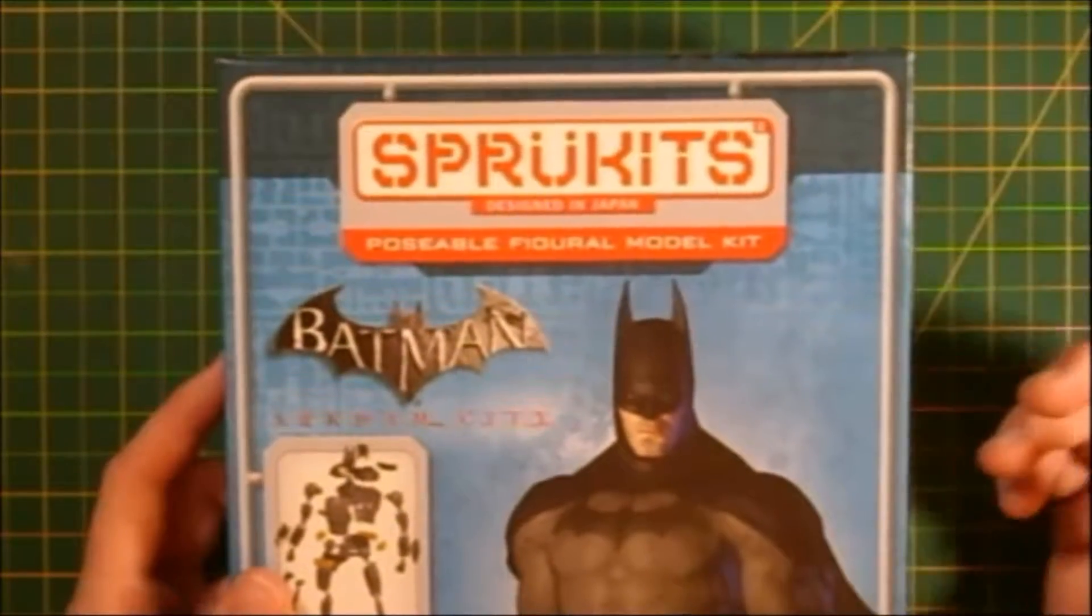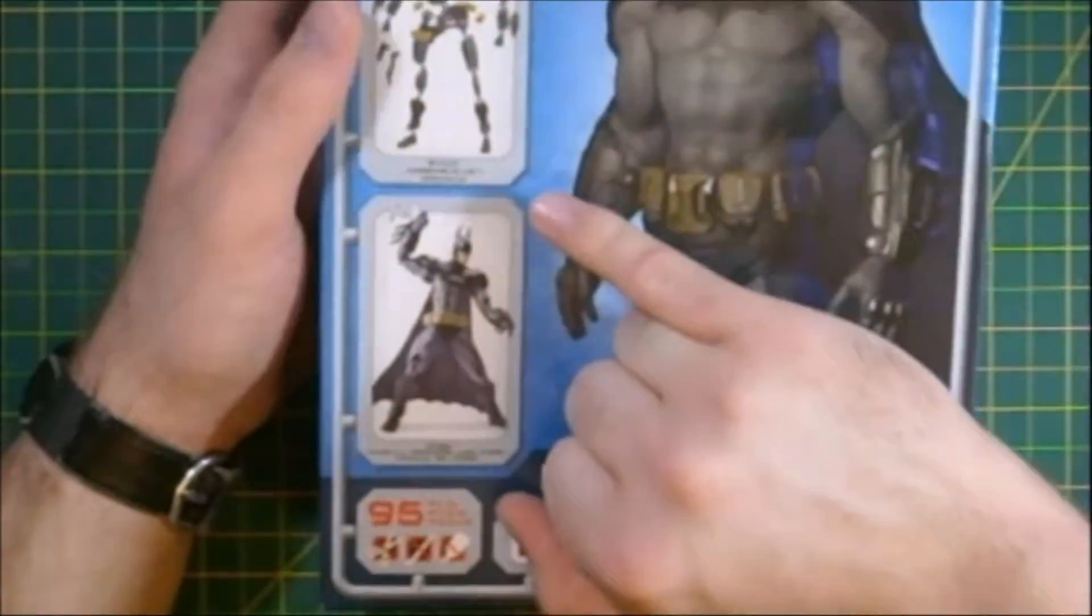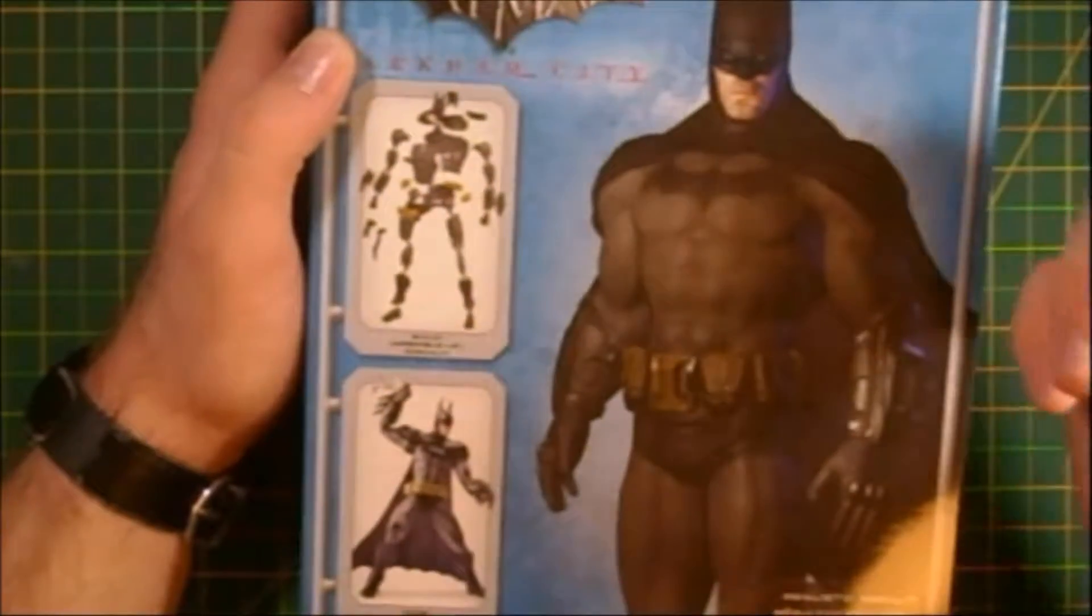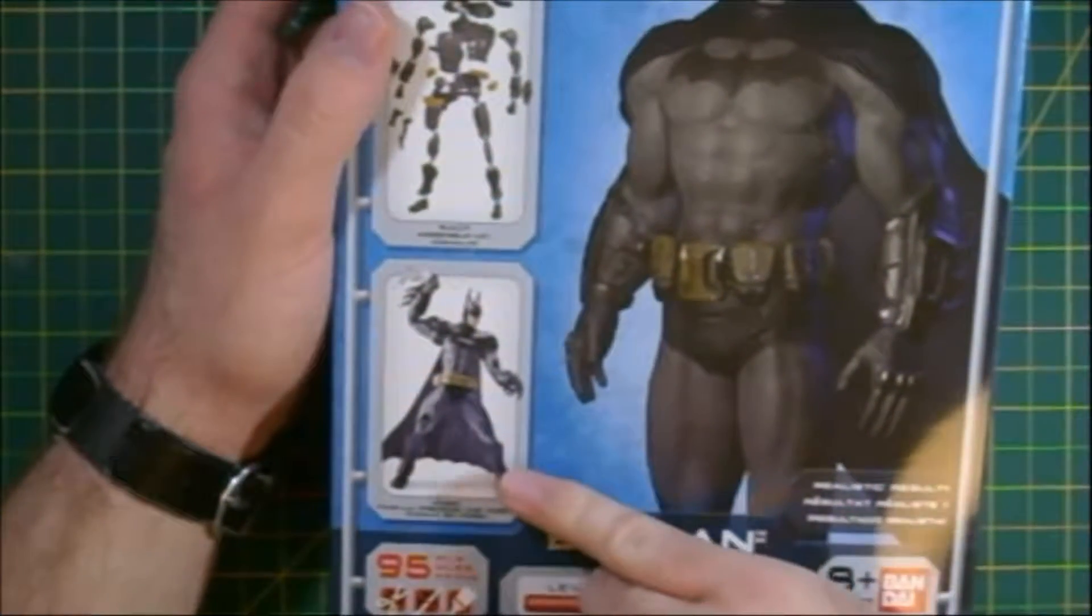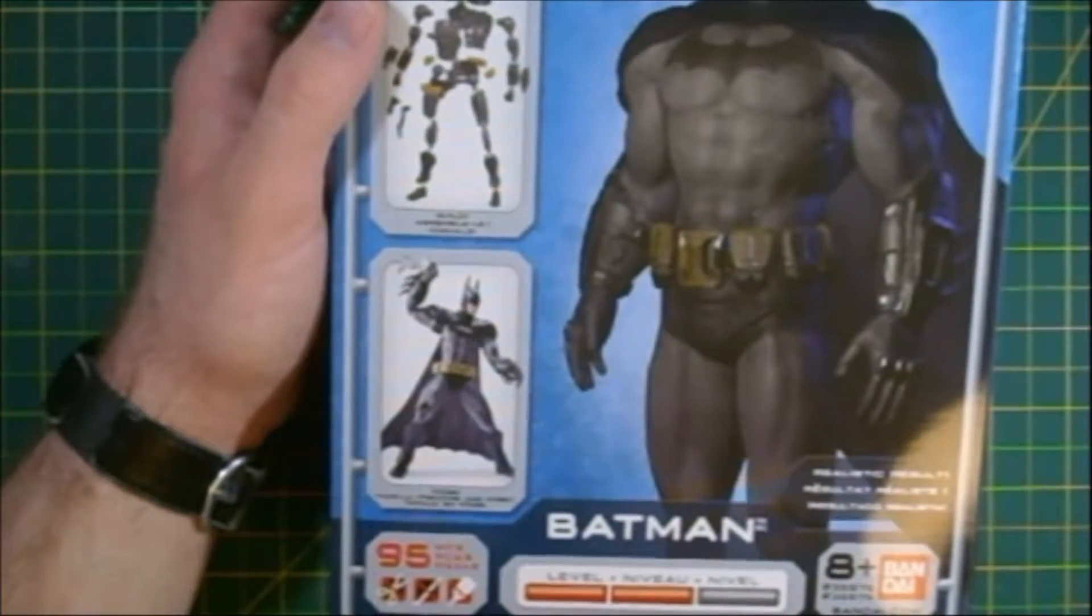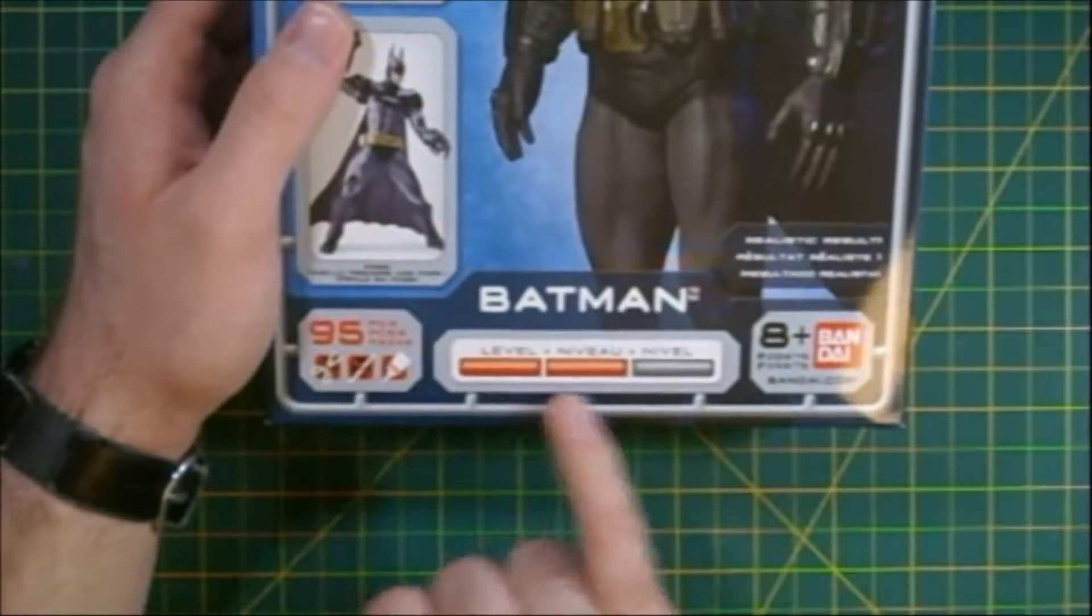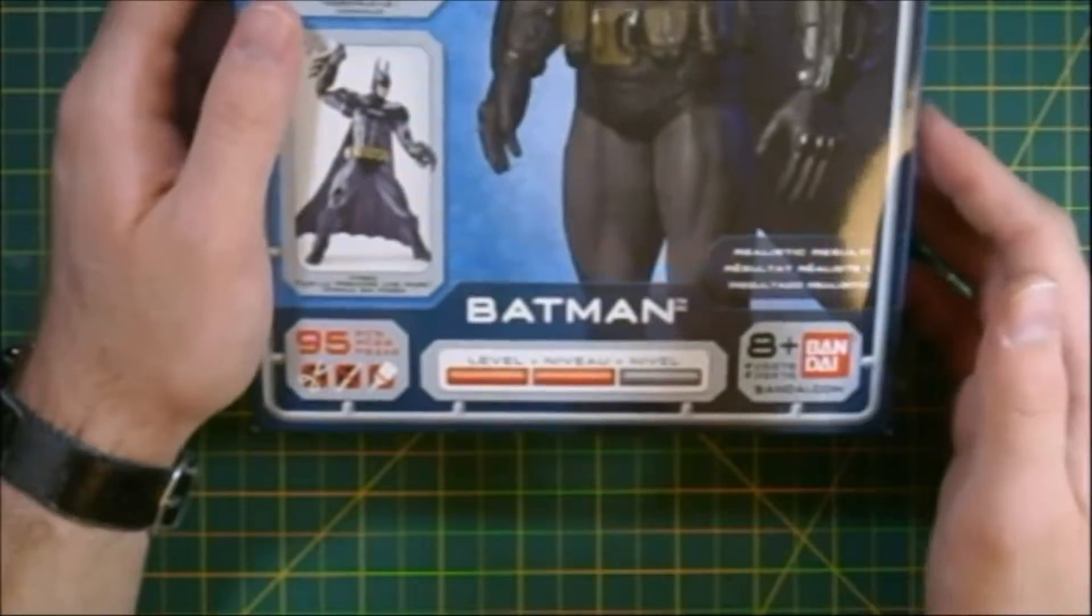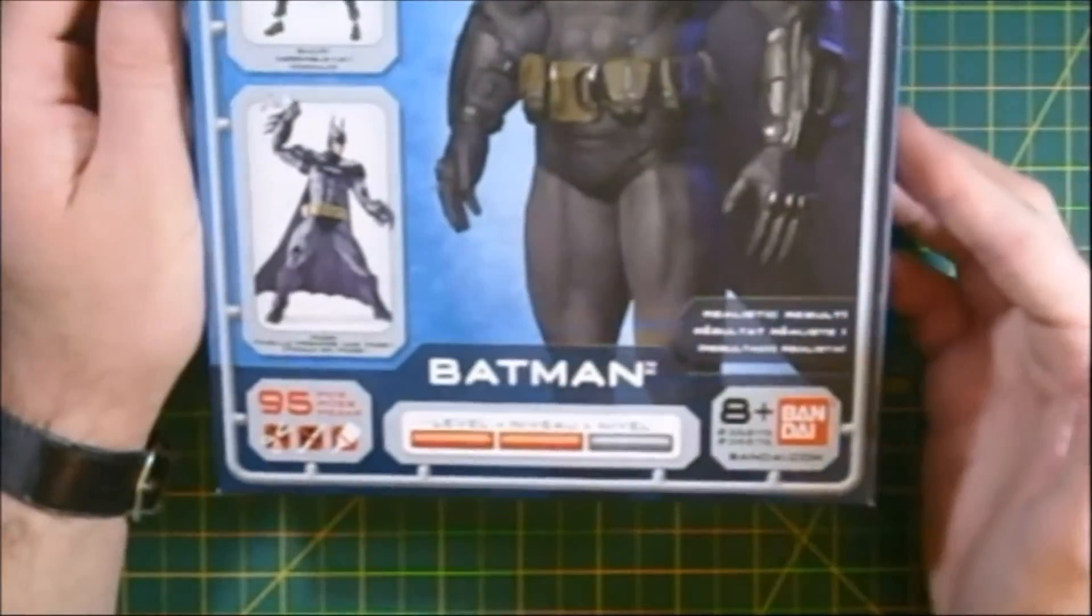Very similar to the Gunpla titling that you'll see on a Gundam kit. Very nice that we get on the front cover these little diagrams here, just showing you an exploded view of the model being assembled in a CGI render, and then a shot of the completed model using just what's in the box, with no special painting.